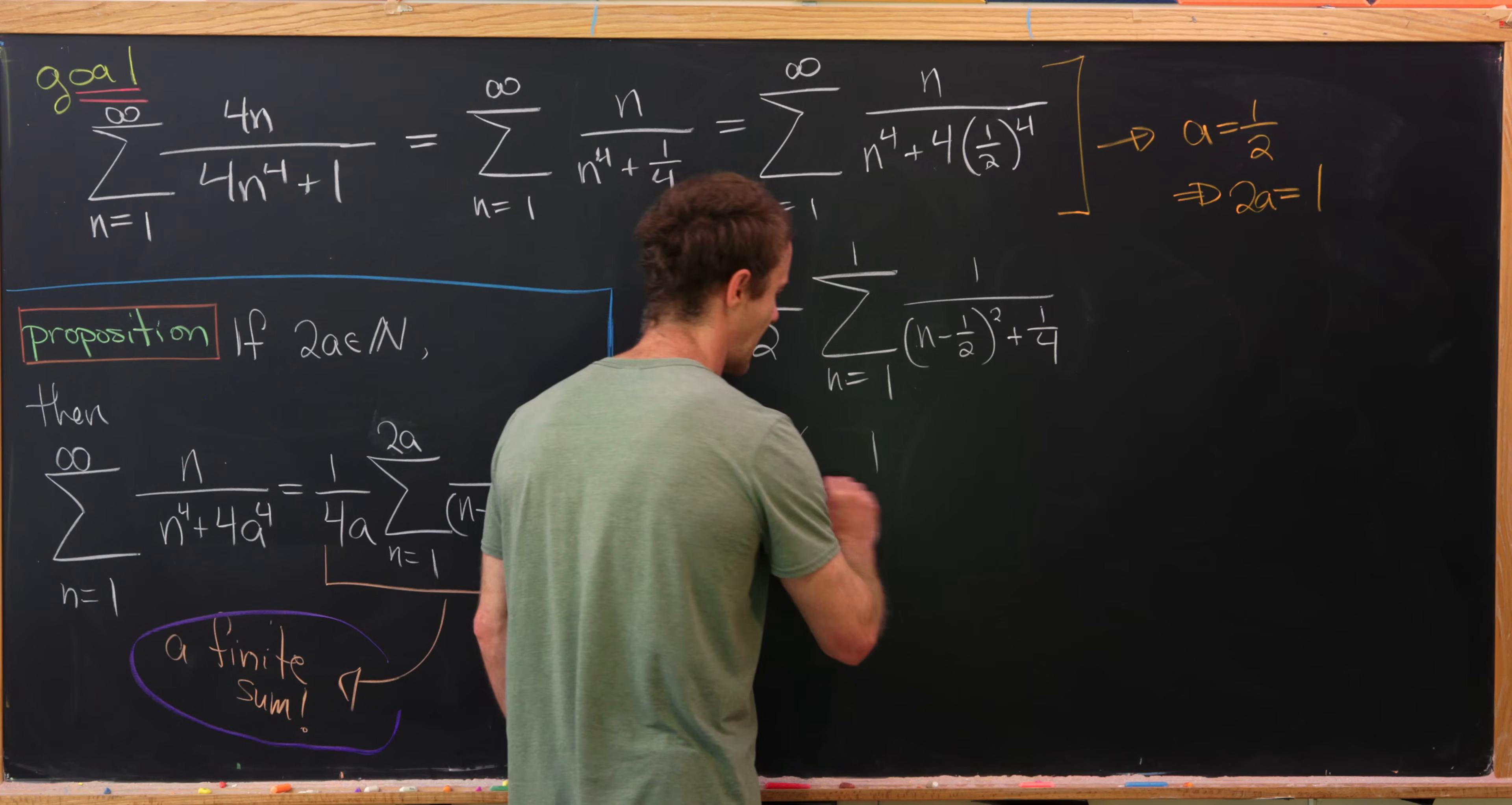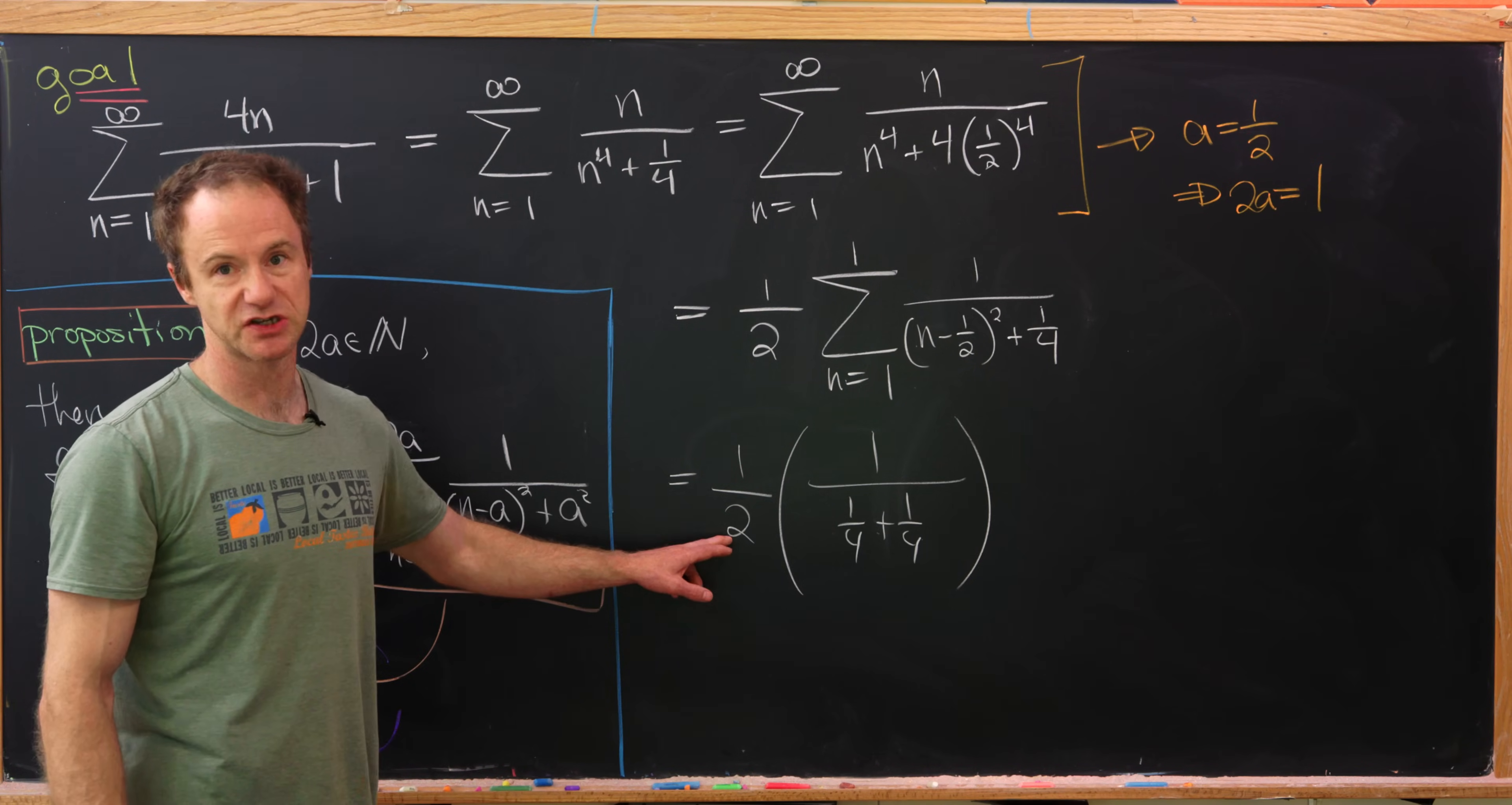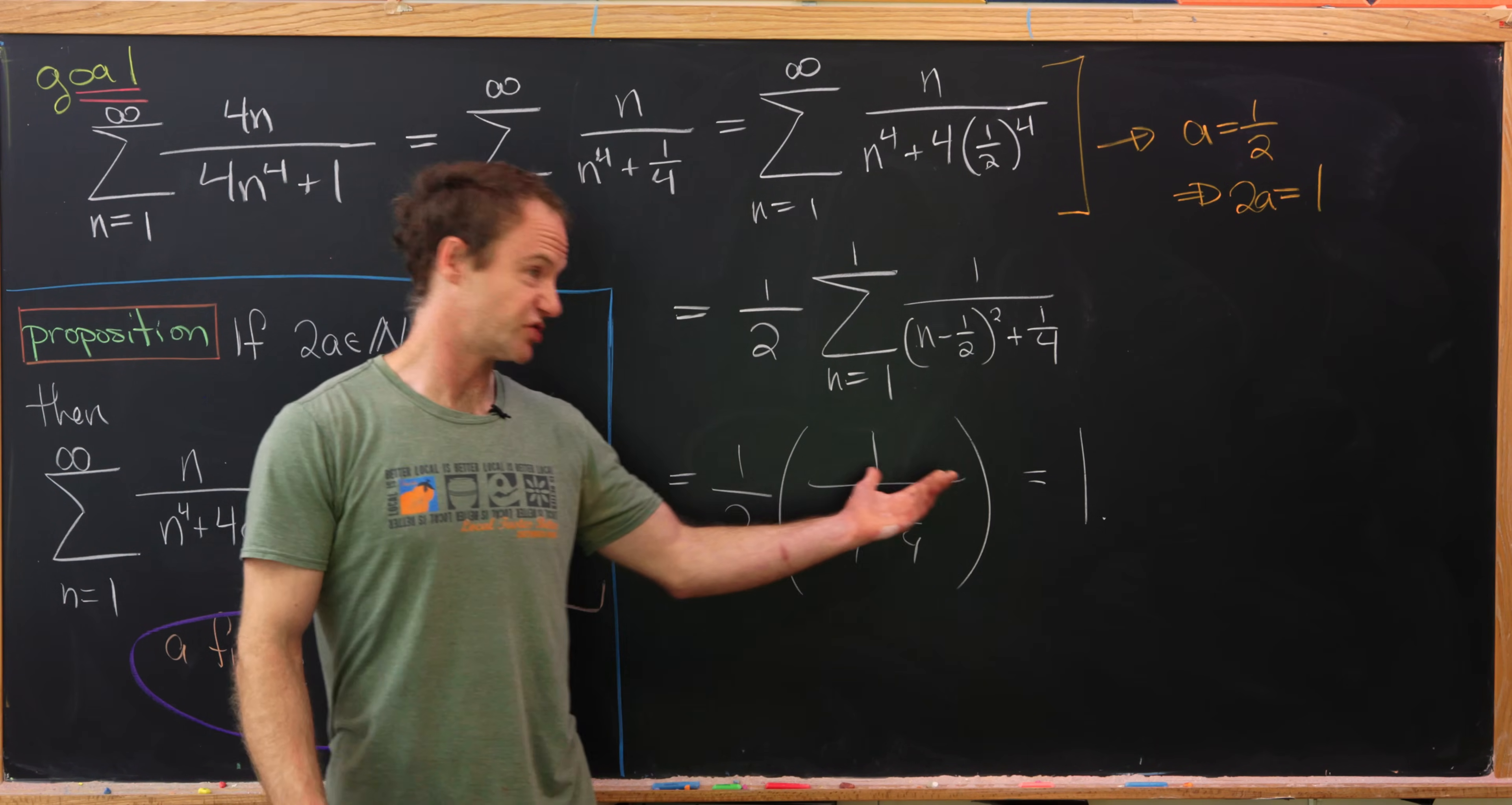So we have 1 half and then 1 over. Well, 1 minus half is exactly half. Square it, you get a quarter. So you get a quarter plus a quarter. But now a quarter plus a quarter is a half. Multiplying this 2 through will give us 1. So we have 1 over 1. In other words, we have the number 1. So there we did it. We found the close form of our goal sum, which happened to be just 1.